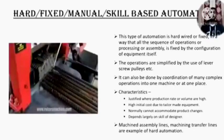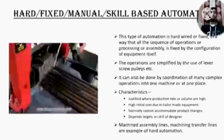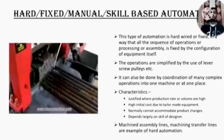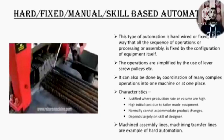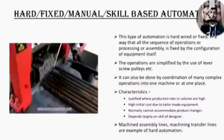First of all, hard, fixed, manual or skill-based automation. This type of automation is hardwired or fixed in such a way that the sequence of operation, processing or assembly is fixed by the configuration of the equipment itself. The operations are simplified by the use of levers, screws, pulleys, etc. It can also be done by coordination of many complex operations into one machine. Characteristics: it is justified where production rate or volume are high; high initial cost due to tailor-made equipment; it normally cannot accommodate product change; it depends largely on the skill of the designer. Machined assembly line and machining transfer line are examples of hard automation.